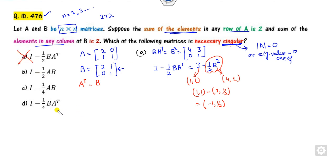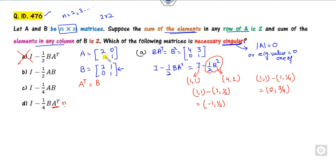For the option I - (1/4)B·A^T: eigenvalues of B² are 4 and 1, dividing by 4 gives eigenvalues 0 and 3/4. Since one eigenvalue is 0, this could be an answer. But since we took an arbitrary example, we use it to discard options. Next, computing A·B gives [4,3;2,2]. Finding eigenvalues of A·B is not straightforward, so consider I - (1/2)AB.